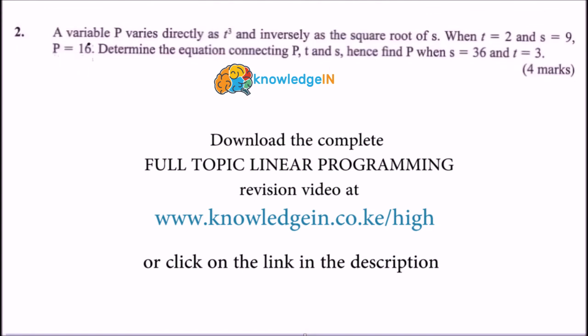It says: a variable p varies directly as t cubed and inversely as the square root of s. When t equals 2, s equals 9, p equals 16. Determine the equation connecting p, t, and s. Hence, find p when s is 36 and t equals...